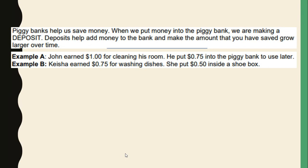Let's look at the examples. John earned $1 for cleaning his room. He put $0.75 into the piggy bank to use later. Because he put $0.75 into the piggy bank, he made a deposit. Keisha earned $0.75 for washing dishes. She put $0.50 inside a shoe box. And because she put $0.50 inside a shoe box, she also made a deposit.